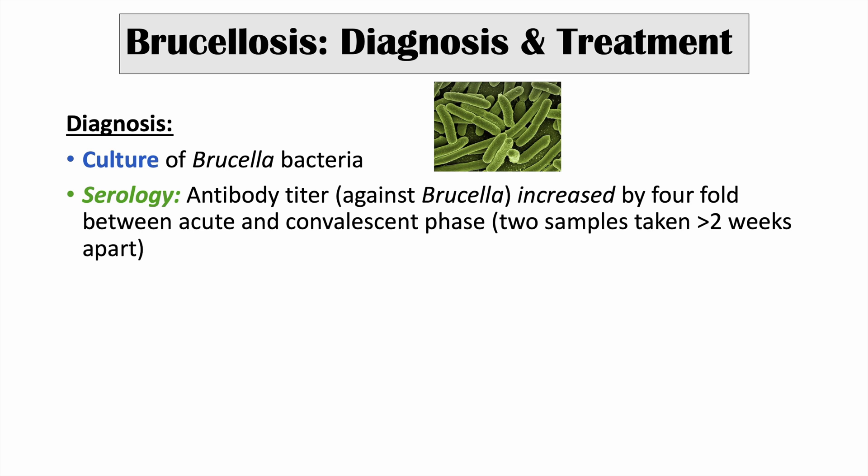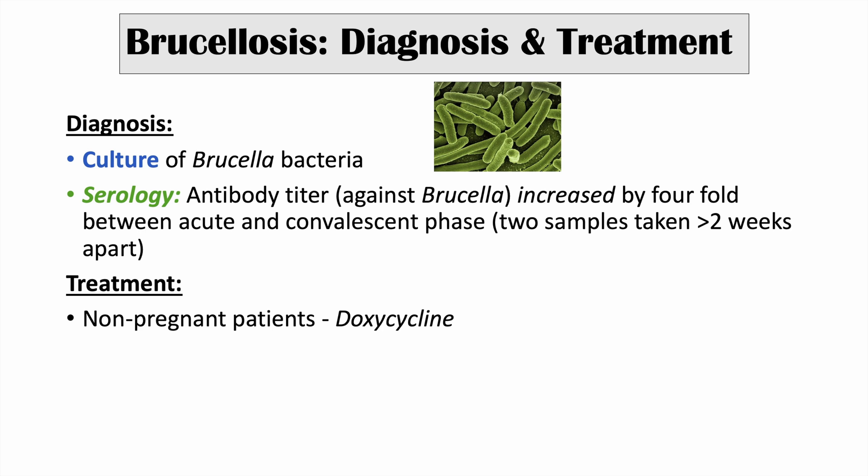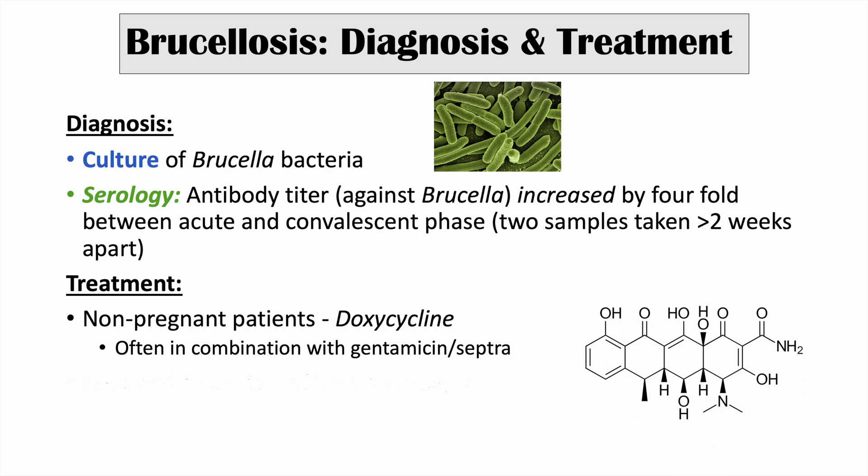Treatment depends on the patient population. In non-pregnant patients, doxycycline is used, often in combination with gentamicin or septra. In pregnant patients and children, doxycycline is not used; instead, clinicians use rifampin with or without septra.